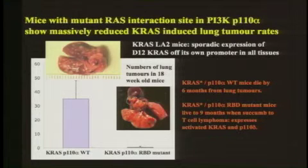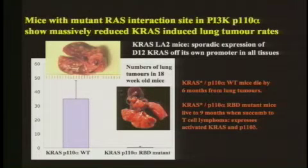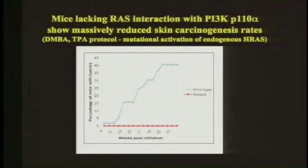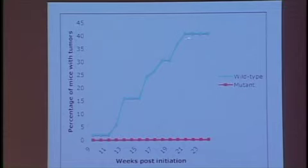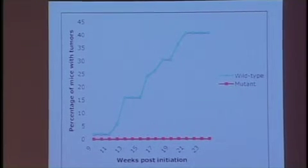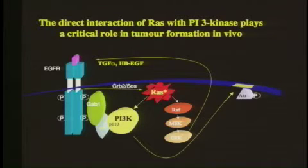Another point with these mice is that as they approach the time they would die from lung tumors, you see hyperproliferation in the gut, but it doesn't turn into a frank malignancy, and the extra lifespan from the mutation doesn't appear to change that. We've also looked at this with a skin carcinogenesis protocol — the DMBA-TPA protocol giving papilloma formation in wild-type mice through activation of the endogenous H-RAS gene. On our mutant background, we really get no tumor formation at all. So this interaction is clearly critical in tumor formation when looking at endogenous H-RAS and endogenous PI3 kinase levels.